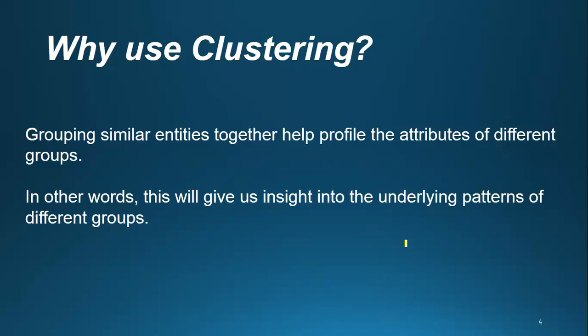For example, if you are going to a market, though the people may be of the same type by their shape, they have different thinking and different customer mindsets. You may make clusters of those people or customers in the market. Companies are making clusters of customers according to their products, demand, and supply.